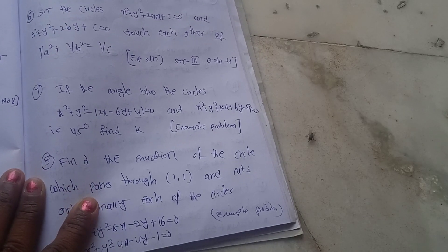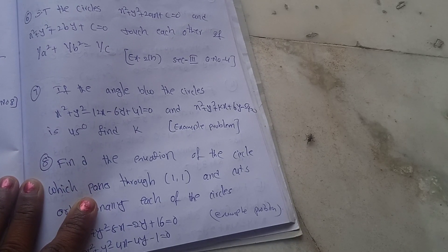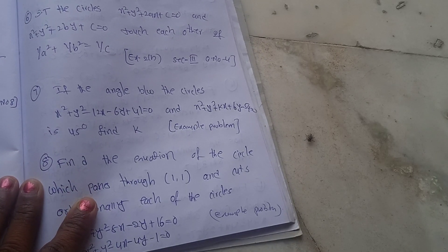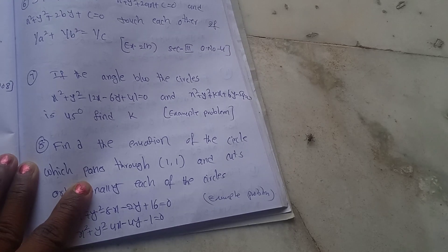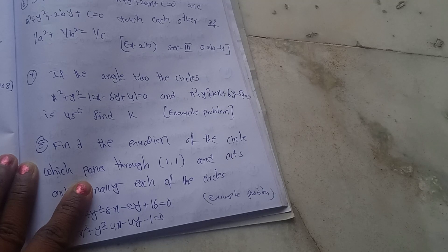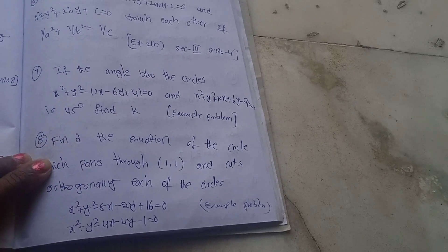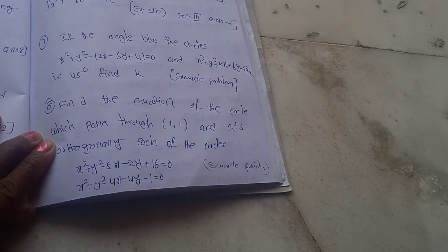Next, if the angle between the circles x² + y² − 12x − 6y + 41 = 0 and x² + y² + kx + 6y − 54 = 0 is 45 degrees, find the value of k. This is an example problem.